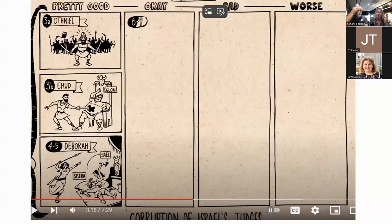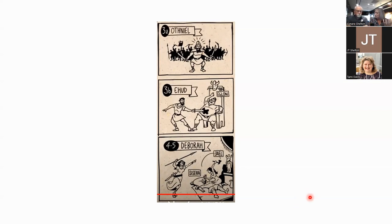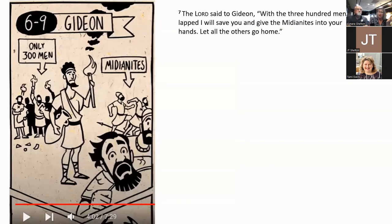There are probably four categories of judges. The first three — Othniel, Ehud, and Deborah — do pretty good. Then we get Gideon, which is okay. Then bad. Then the worst. These first three were raised up by God to defeat enemies and deliver the people. God raised these people up and through Him they were empowered — it wasn't that they were all that great in and of themselves.